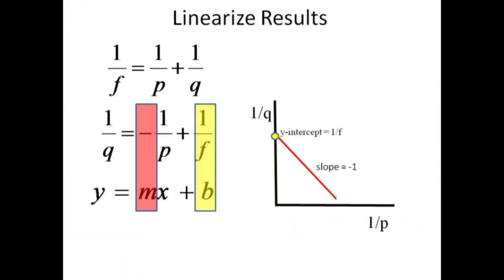If we rearrange the lens equation, solving for the inverse of q in terms of the inverse of p and the inverse of f gives 1 over q equals minus 1 over p plus 1 over f. This represents a straight line when we consider 1 over q as y and 1 over p as x.